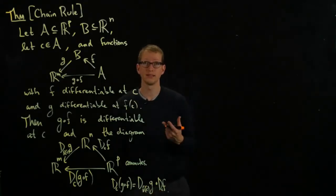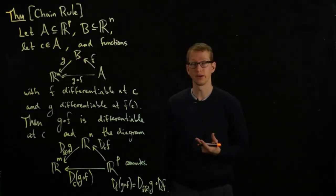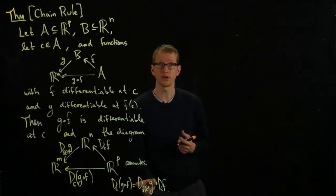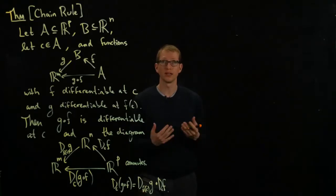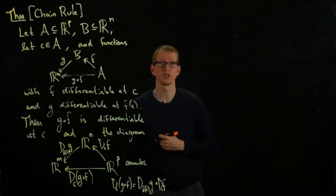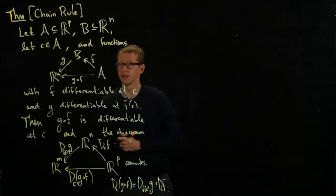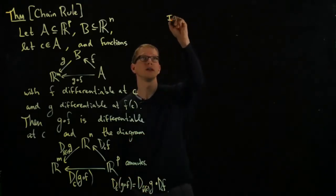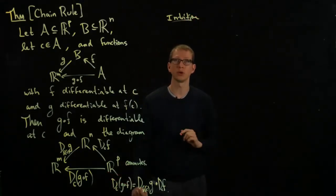You can check that this is exactly the same result for functions of a single variable, when we interpret these linear operators as just the slopes of the function at those points. When we multiply two such slopes, that's exactly multiplying two linear transformations from R to R. Instead of giving the proof of this theorem, let's describe the intuition for why this formula should work.